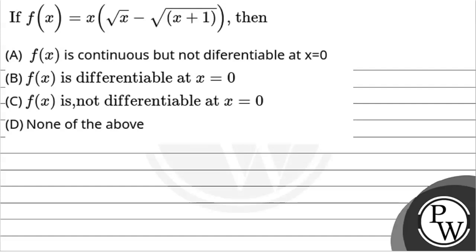Let's see the question. The question says: if f(x) is equal to x times (√x minus √(x+1)), then the options are: (a) f(x) is continuous but not differentiable at x=0, (b) f(x) is differentiable at x=0, (c) f(x) is not differentiable at x=0, and (d) none of the above. First we will write the concept to solve this question.